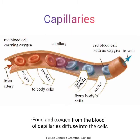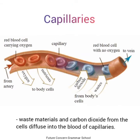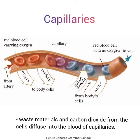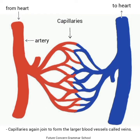Food and oxygen from the blood of capillaries diffuse into the cells — capillaries میں موجود خون میں خوراک اور oxygen cells میں چلی جاتی ہیں۔ Waste materials and carbon dioxide from the cells diffuse into the blood of capillaries — جبکہ cells میں موجود فاسد مادے اور carbon dioxide capillaries میں موجود خون میں چلے جاتے ہیں۔